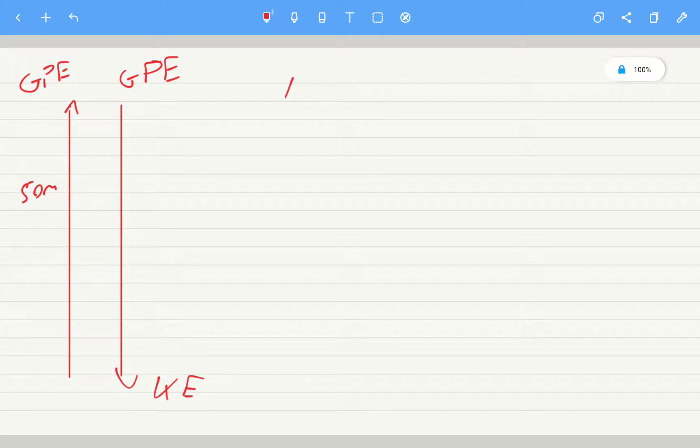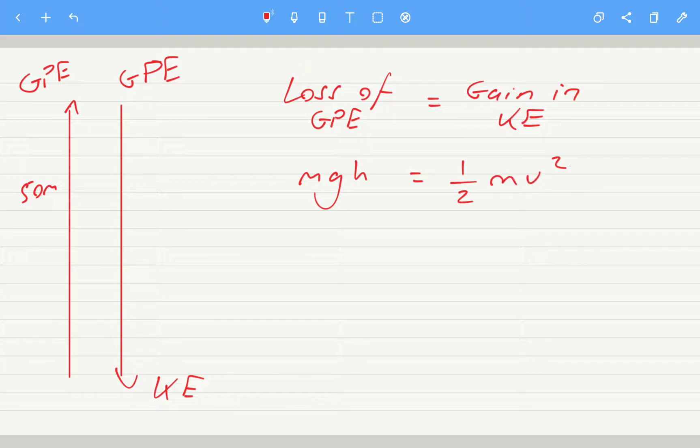So we can write it like this. The loss of GPE is equal to the gain in kinetic energy. So the loss of GPE, the equation, is mass times gravitational field strength times height equals the gain in kinetic energy, which is a half mv squared. And if you look at this, you can see that the masses would cancel, and then we can rearrange to find the speed v.